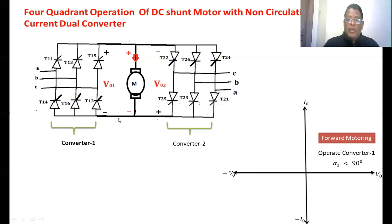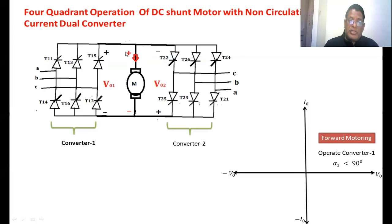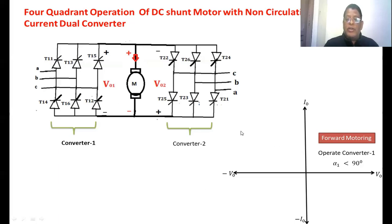If the firing angle of Converter 1 is maintained greater than 90 degrees, the average output voltage becomes negative — the lower terminal becomes positive and the upper terminal becomes negative. However, this converter still allows current only from top to bottom, so the current direction does not change. With negative voltage and positive current, load power becomes negative — this is braking in the forward mode, represented by second quadrant operation.